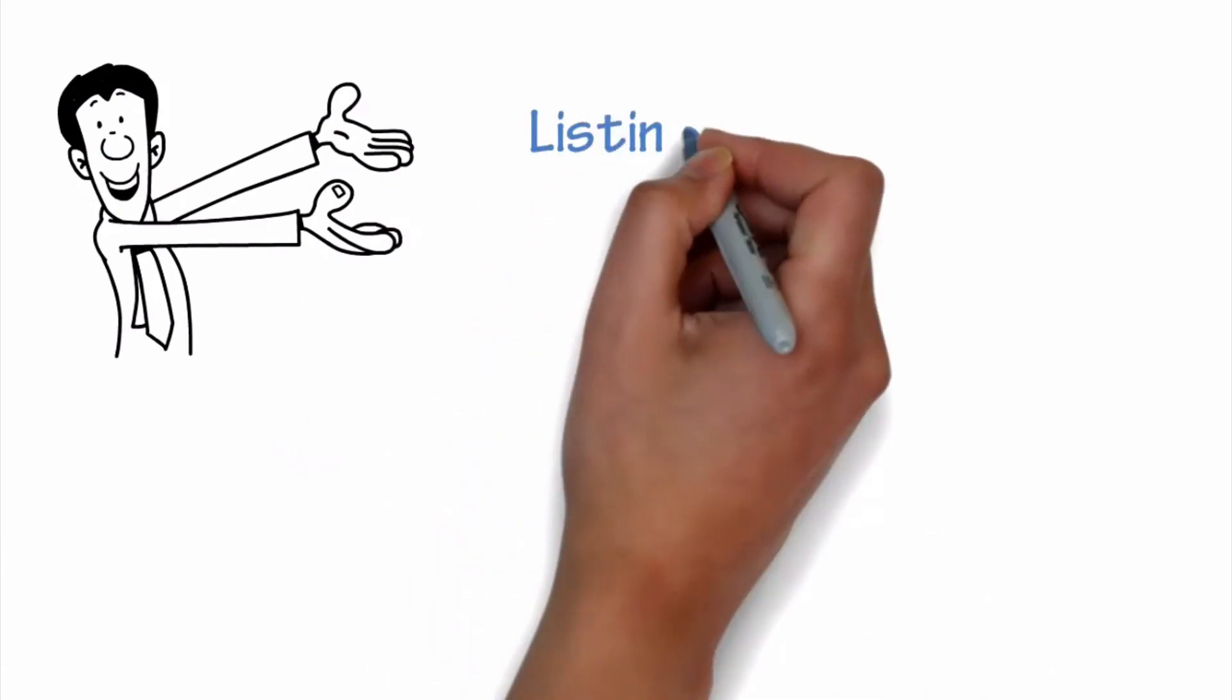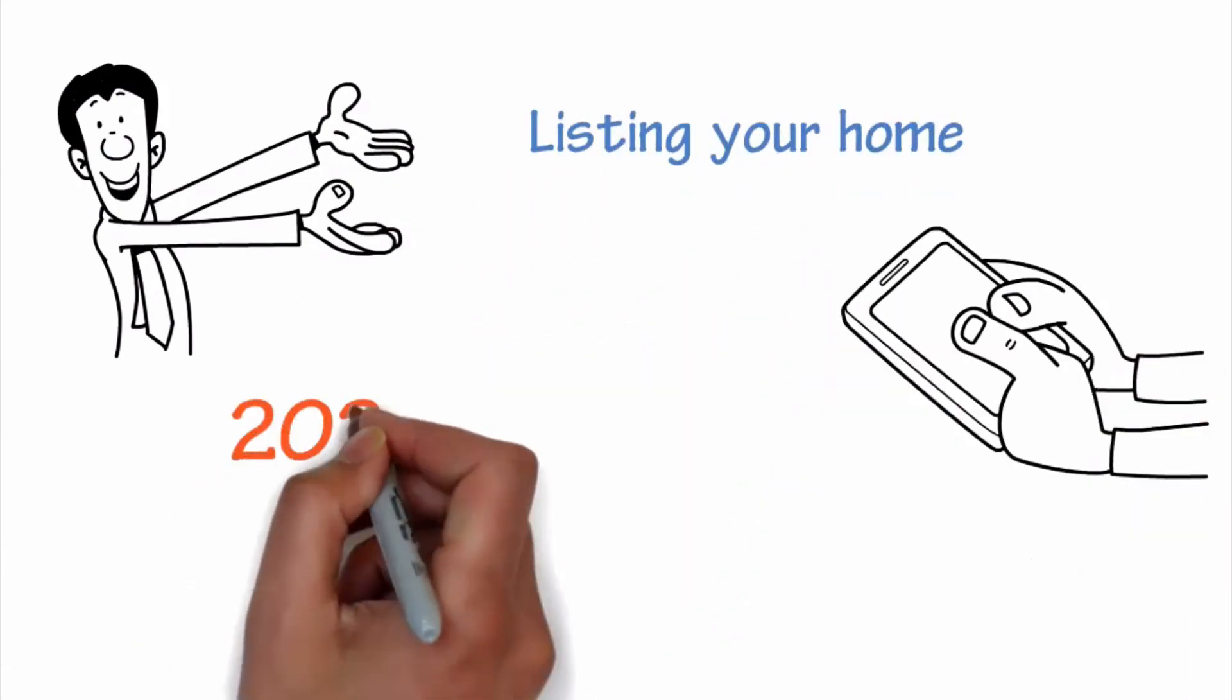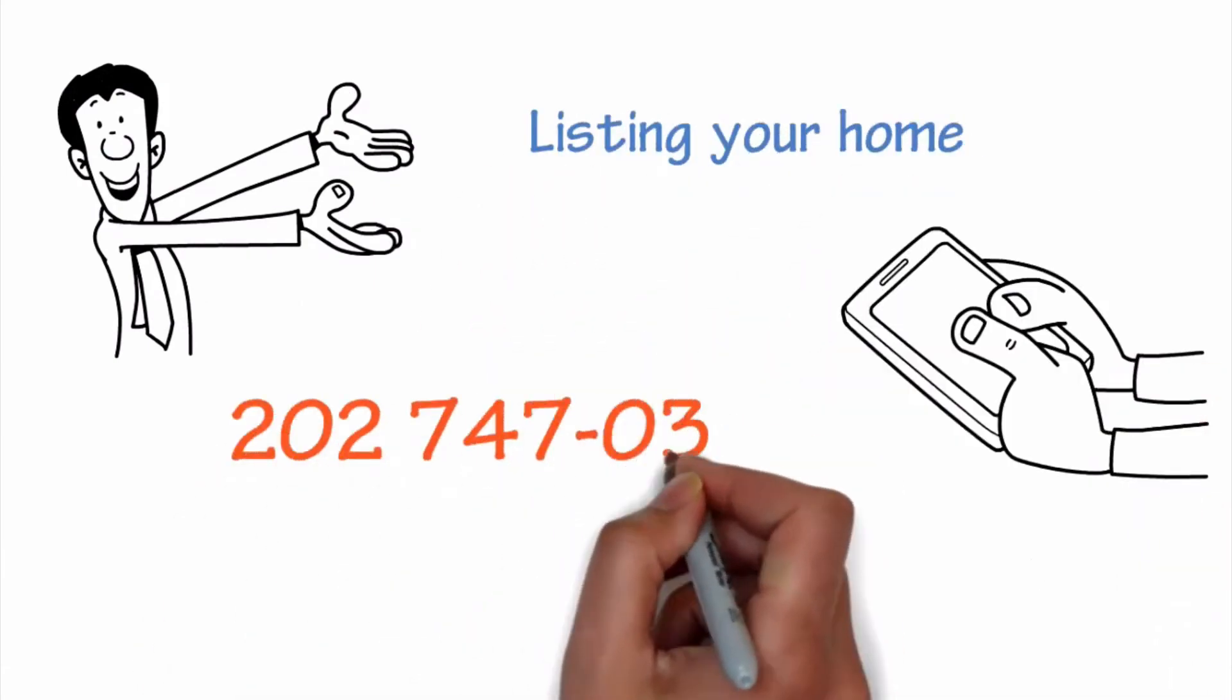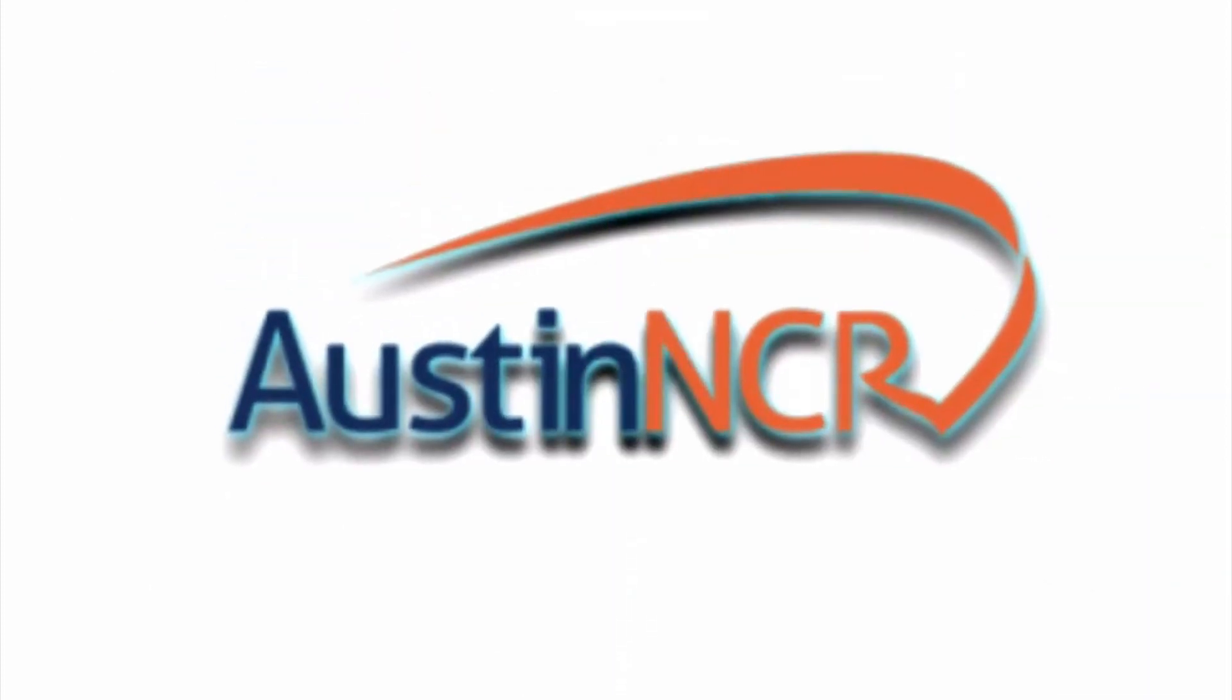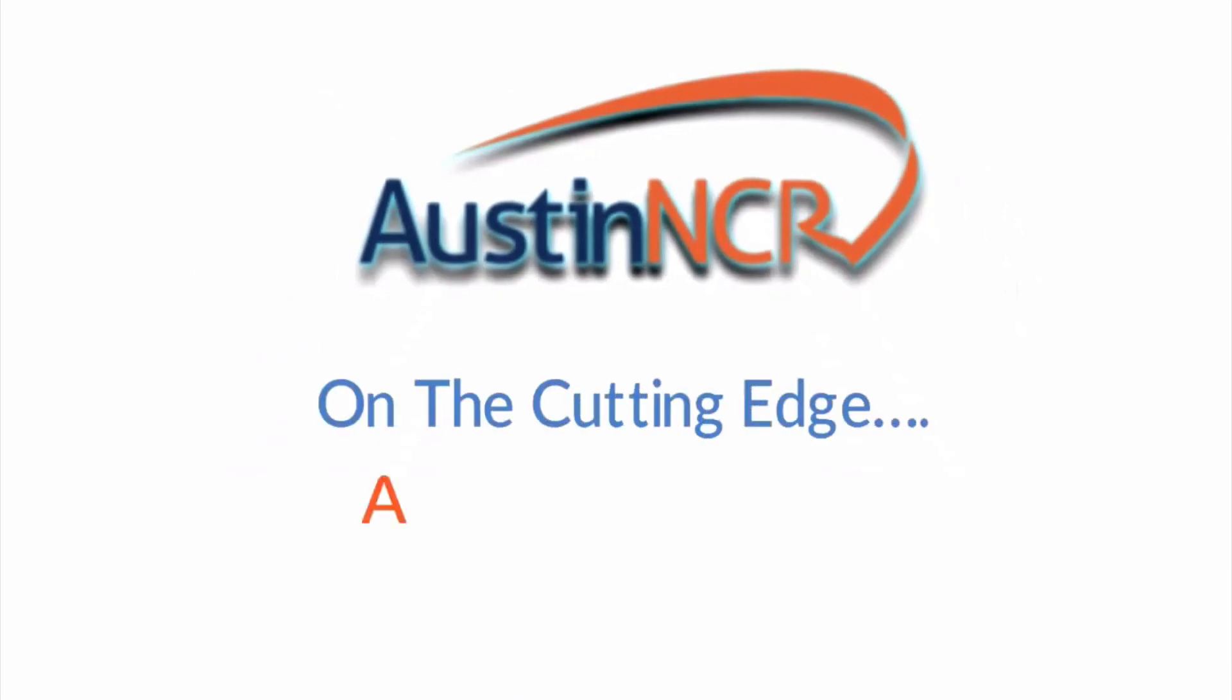To learn about listing your home, call 202-747-0345 now or fill out our form directly below. Austin NCR: on the cutting edge and a cut above.